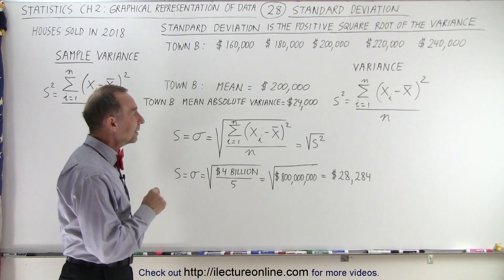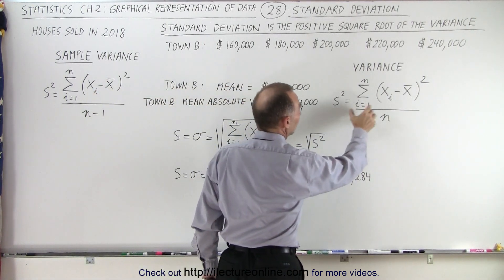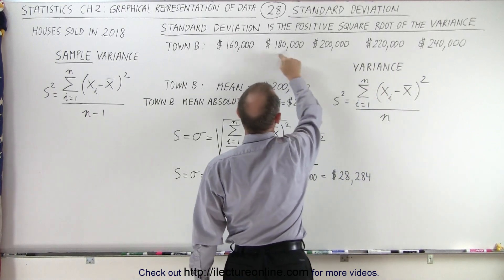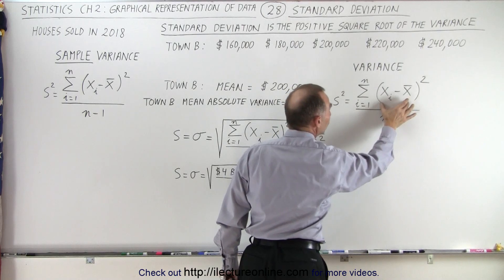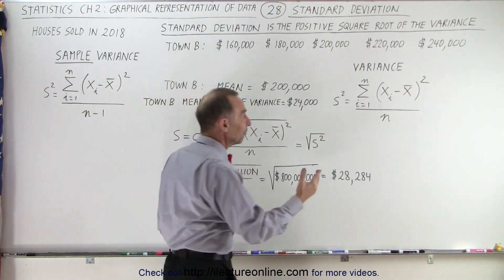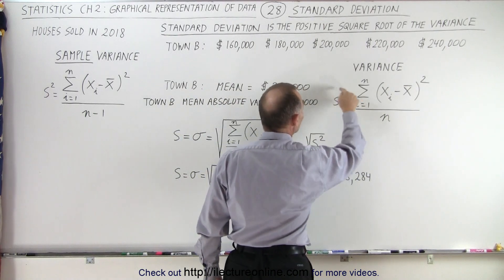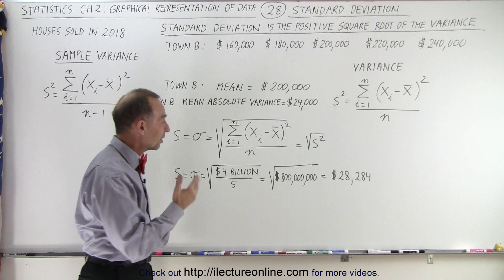Then when we calculated the variance, what we did was we took the difference between each of the house prices and the average, we squared those, we summed them all up. There were 5 of those differences, we summed them all up, we divided by 5, and that gave us what we call the variance. In our case, the variance was 800 million.